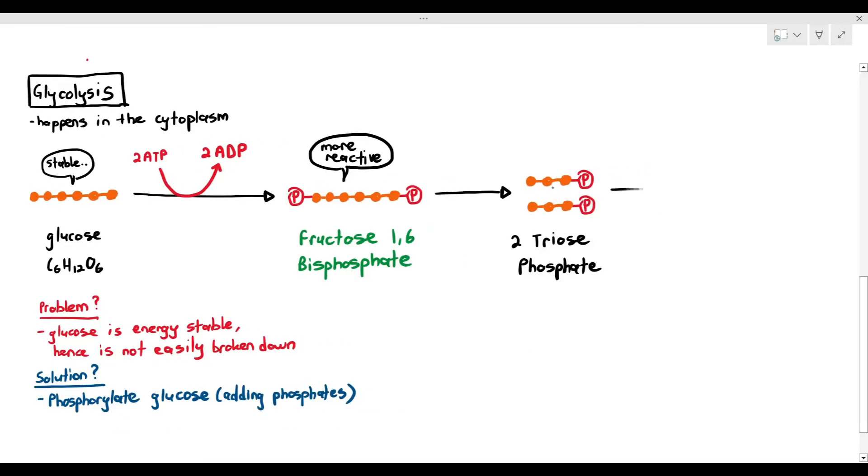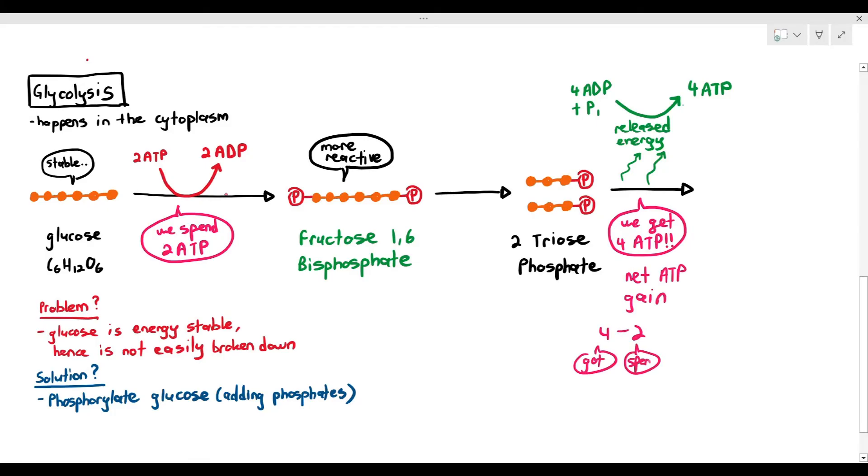What needs to happen is the triose phosphate will undergo the next stage, which is known as substrate-linked reaction, where it releases a little bit of energy and that energy is used to make four ATP molecules. At the beginning of glycolysis, you had to spend two ATP, but towards the end of glycolysis, you get four ATP molecules. So it's a net gain of two ATP molecules, which is a good thing.